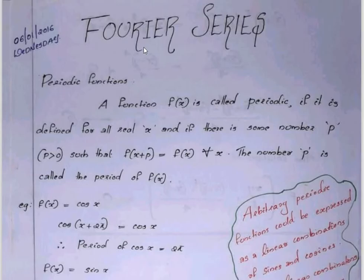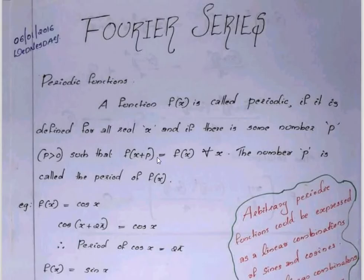We are going to talk about Fourier Series — that is, the periodic function definition. A function f of x is called periodic if it is defined for all real x, and if there is some positive number p such that f of x plus p equals f of x for all x. The number p is called the period of f of x.